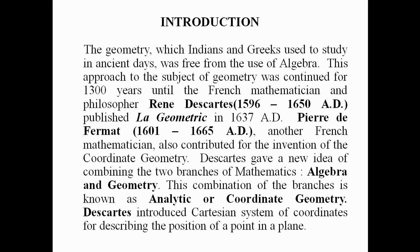The geometry which Indians and Greeks used to study in ancient days was free from the use of algebra. This approach to the subject of geometry was continued for 1300 years until the French mathematician and philosopher René Descartes published La Geometric in 1637 AD. This is the history. Pierre de Fermat, another French mathematician, also contributed to the invention of Coordinate Geometry. Descartes gave a new idea of combining the two branches of mathematics — algebra and geometry. This combination is known as analytic or coordinate geometry.